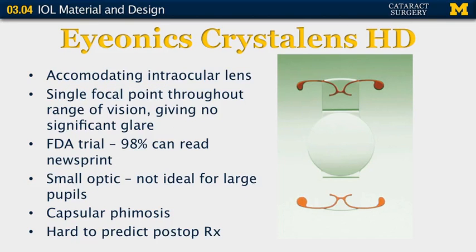A third alternative is the IONX Crystalens HD. This is a completely different style of lens that relies upon hinged areas on the lens to allow flexing. When a patient attempts accommodation, the lens can flex and move forward anteriorly in the eye, allowing a different point of focus on the retina. This gives patients near vision as well as distance vision in the relaxed state. In an FDA trial, 98 percent of patients were able to read standard newsprint size with this lens. It has a smaller optic, so it may not be ideal for patients with larger pupils. There is a greater incidence of capsular phimosis, and surgeons report it is somewhat harder to predict postoperative refraction with this lens.